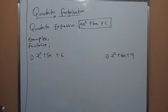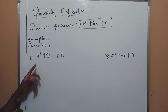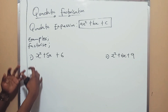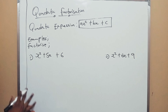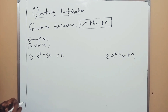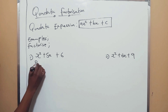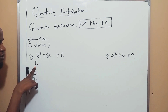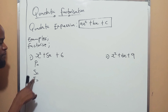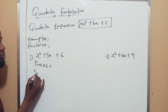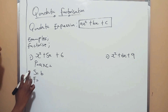Let's look at our first example. Factorize x squared plus 5x plus 6. This is a quadratic expression and they want you to factorize. To factorize a quadratic expression, you need to find three things: the product, the sum, and the factor. The product is found by multiplying a times c. The sum is your b.